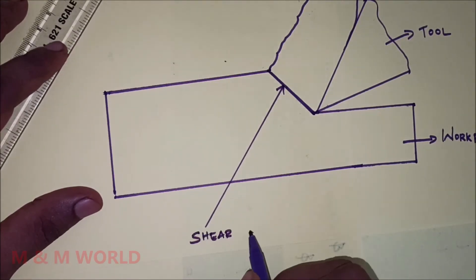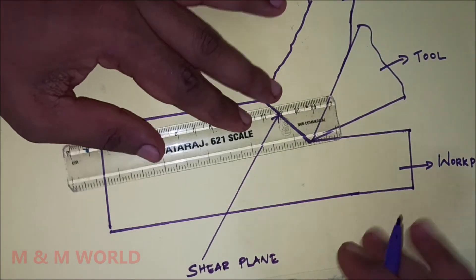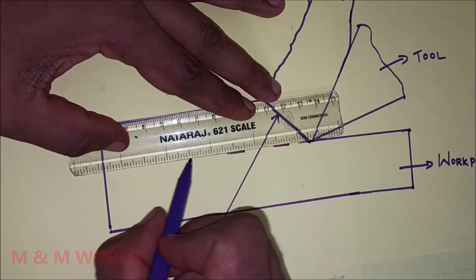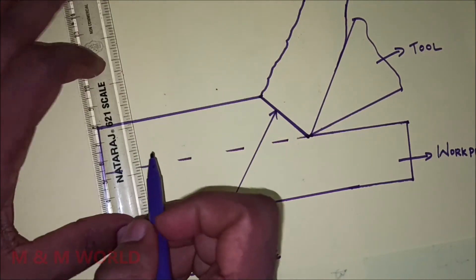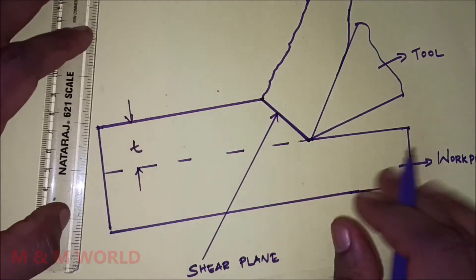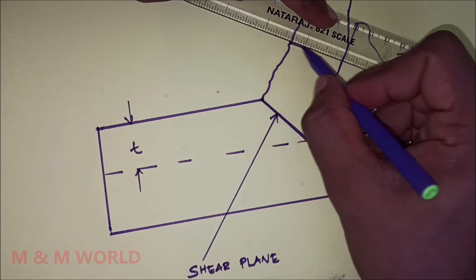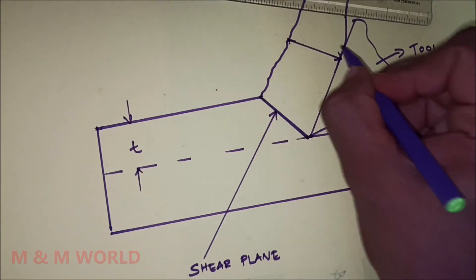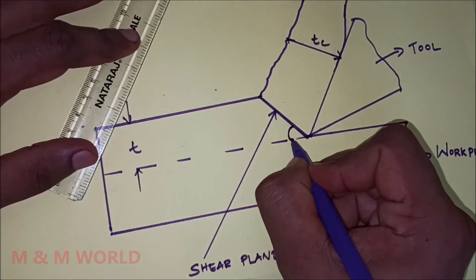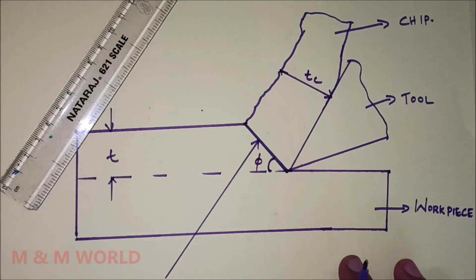Here T is the depth of cut and Tc is the chip thickness. This shear plane makes an angle phi, which is called the shear angle.